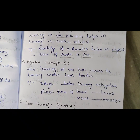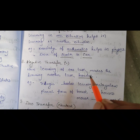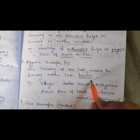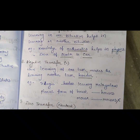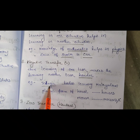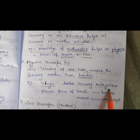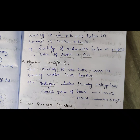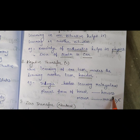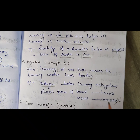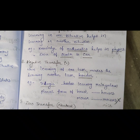Negative transfer — when learning one task makes another task harder or more difficult, it is called negative transfer. For example, if you learn Telugu, it may hinder you in learning Malayalam. Another example: you know the plural of 'house' is 'houses,' so you might write 'mouses' instead of 'mice' for mouse — that is wrong. The correct plural of mouse is 'mice.' This interference is negative transfer.